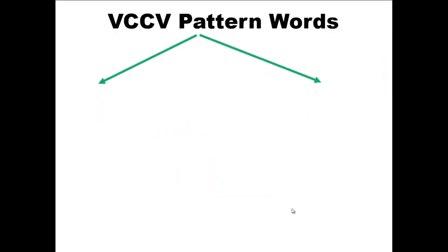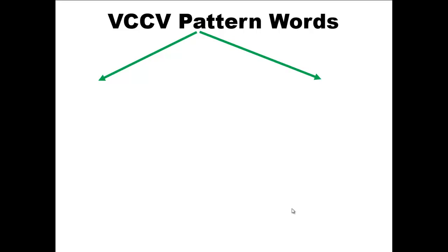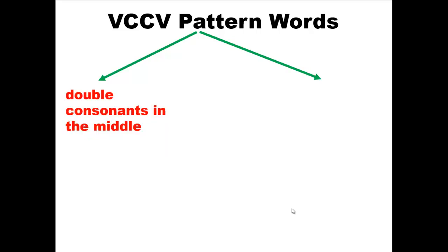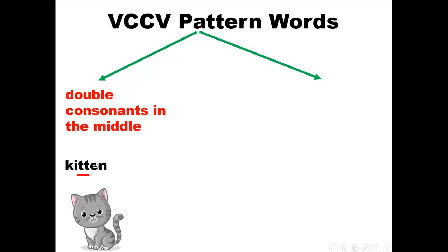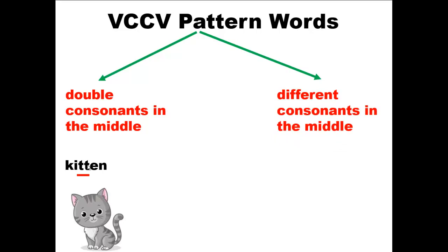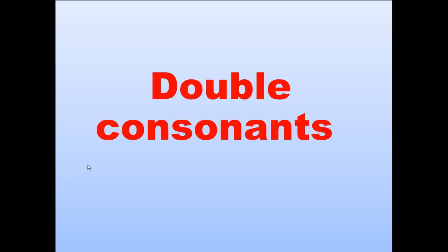The VCCV pattern words are divided into two groups. The first group is words with double consonants in the middle, like for example kitten. And the second group is words with different consonants in the middle, like napkin. Now let's start with the spelling words in the first group.